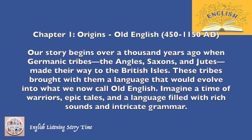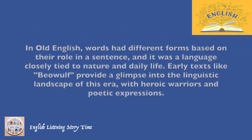Our story begins over a thousand years ago when Germanic tribes — the Angles, Saxons, and Jutes — made their way to the British Isles. These tribes brought with them a language that would evolve into what we now call Old English. In Old English, words had different forms based on their role in a sentence, and it was a language closely tied to nature and daily life. Early texts like Beowulf provide a glimpse into this era, with heroic warriors and poetic expressions.